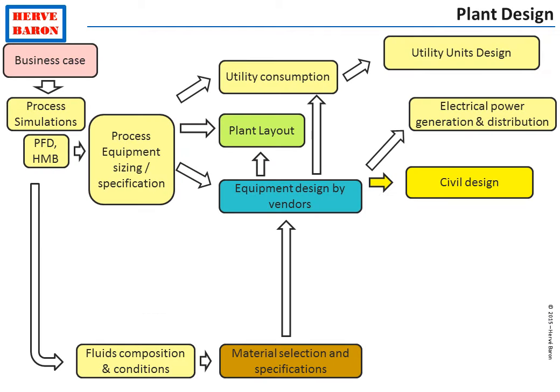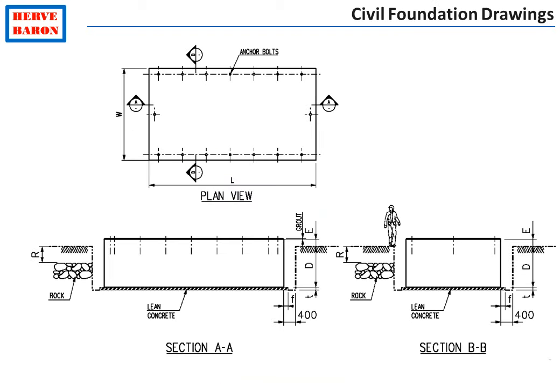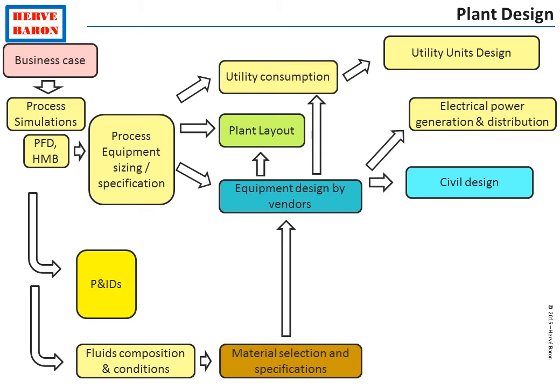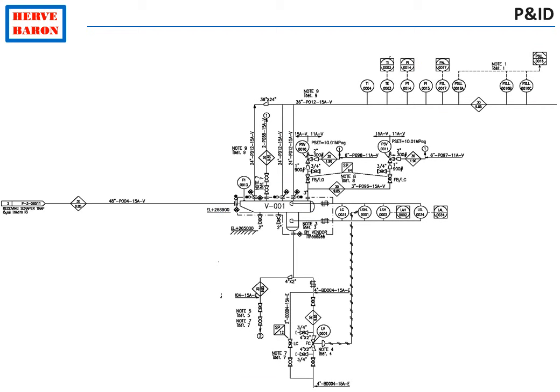Information from vendors is also required to design the civil works, in particular the equipment foundations, because vendors will advise the load and the footprint of their equipment so that the proper foundation can be designed. The process design is further developed from process flow diagrams into P&IDs — piping and instrumentation diagrams. P&IDs show all the equipment, piping, instrumentation, and valves. It is the main document for plant operation, so it is very much discussed between the plant owner and the engineer during the design phase.